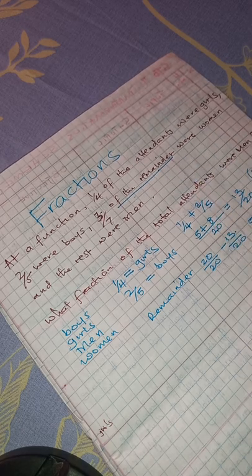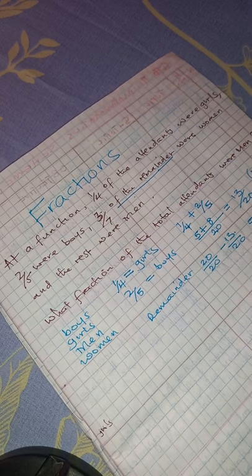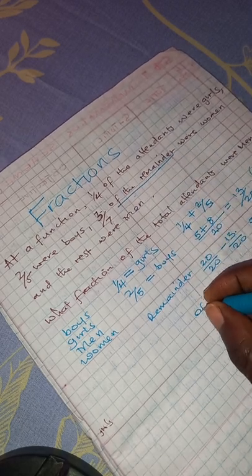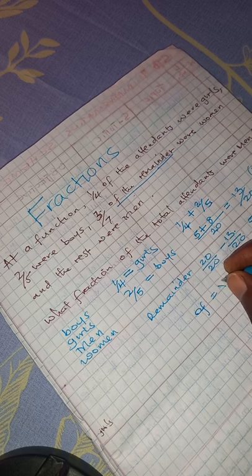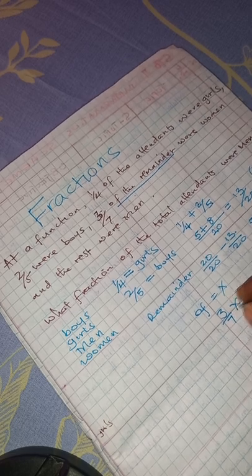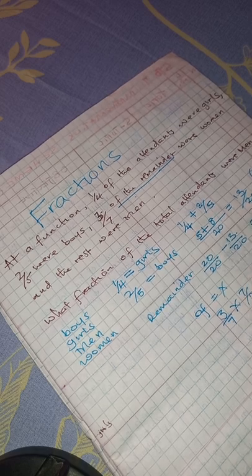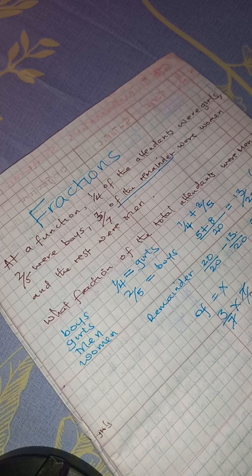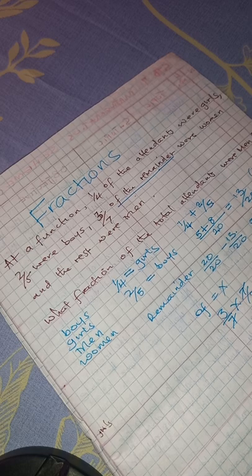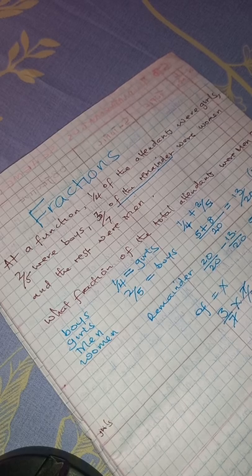To get the fraction for women, we calculate three over seven of seven over 20. We know that 'of' means multiplication, so this becomes three over seven times seven over 20. The sevens cancel, and we remain with 3 over 20. So 3 over 20 represents the women.